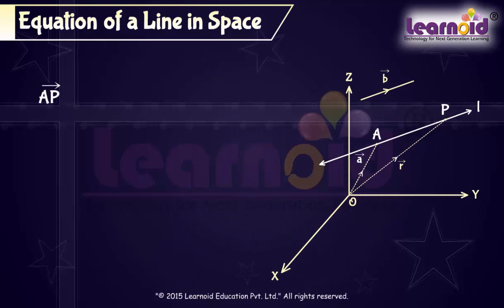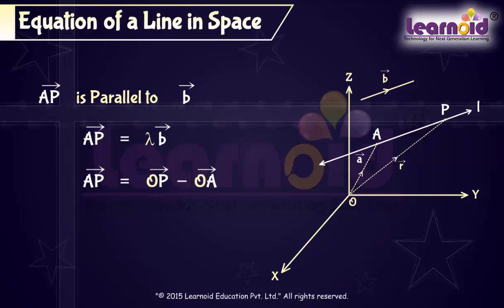AP is parallel to the vector B, so vector AP is equal to lambda vector B. But AP is equal to OP minus OA. So we can write lambda B vector is equal to vector R minus vector A.